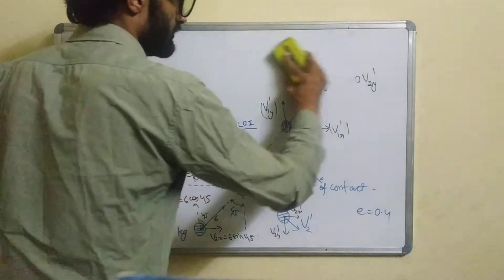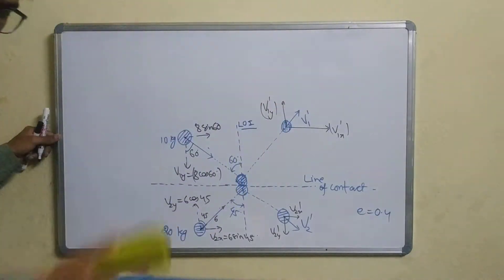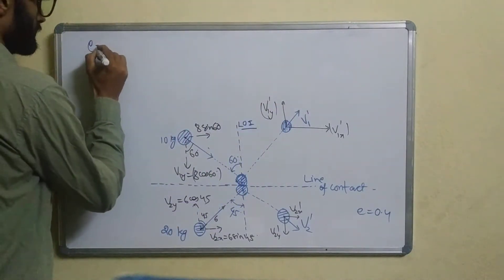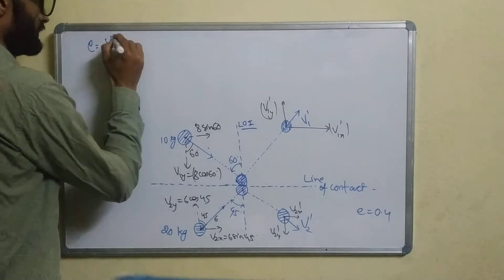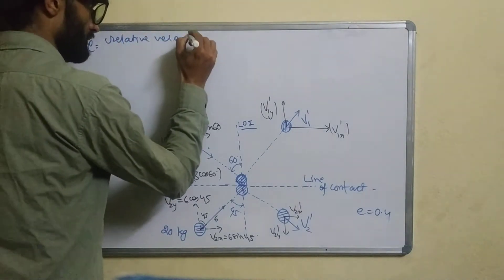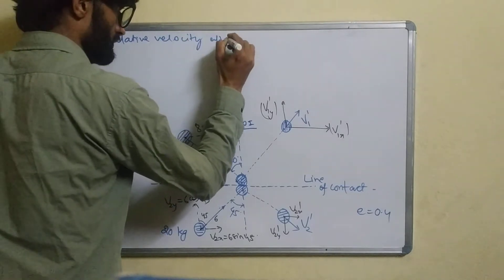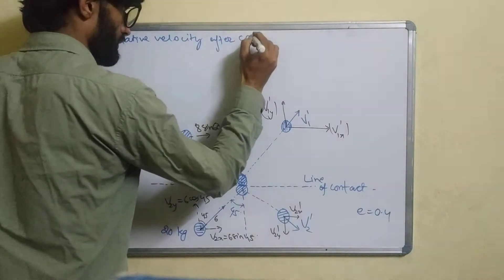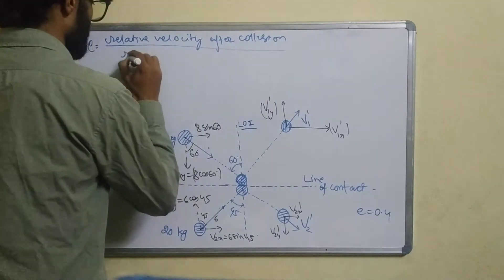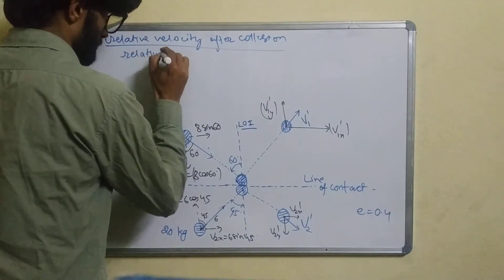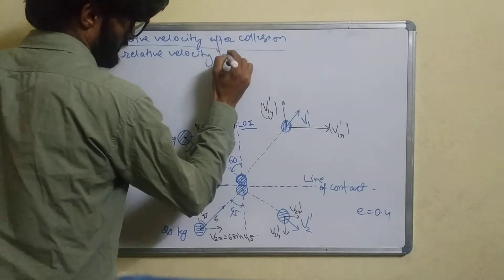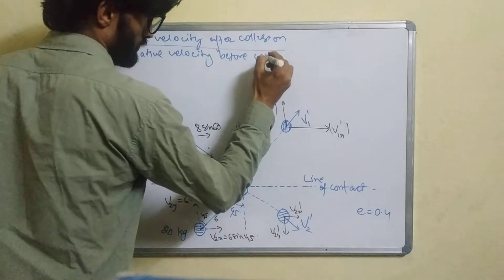This is the formula of the coefficient of restitution: e = relative velocity after collision divided by relative velocity before collision.